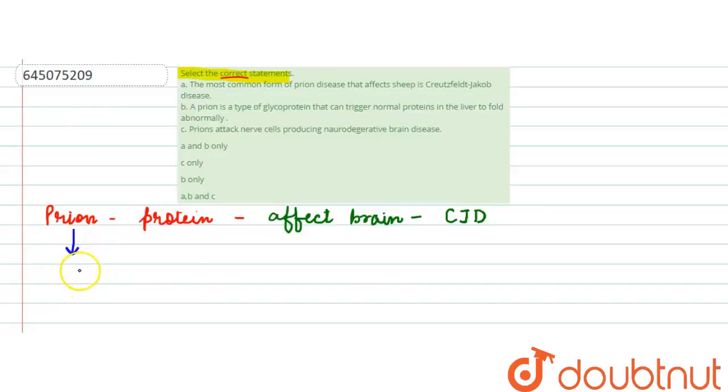If we talk about the group of infectious agents, basically the prion causes diseases that are neurodegenerative diseases. That means it is affecting the brain cells and causing the nervous system to get affected.